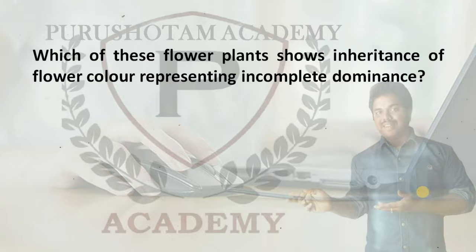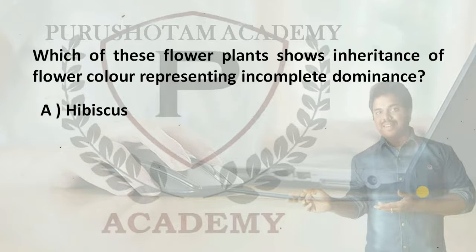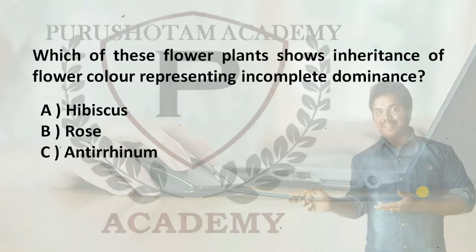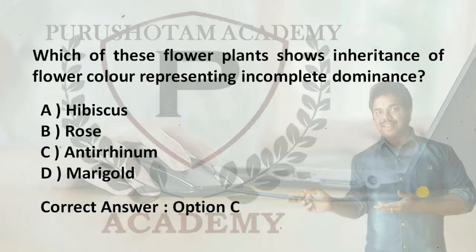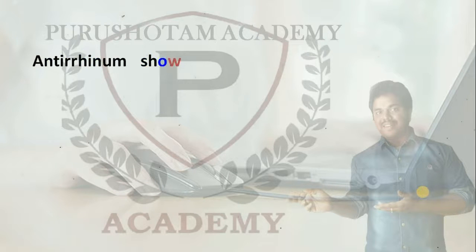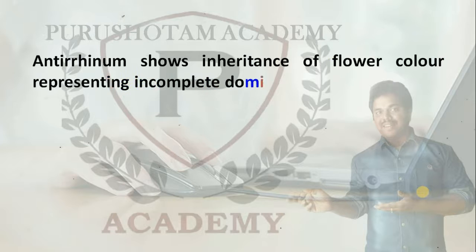Next question: which of these flowering plants shows inheritance of flower color representing incomplete dominance? Option A: hibiscus. Option B: rose. Option C: Antirrhinum. Option D: marigold. The right answer is Option C, Antirrhinum. Explanation: Antirrhinum shows inheritance of flower color representing incomplete dominance.